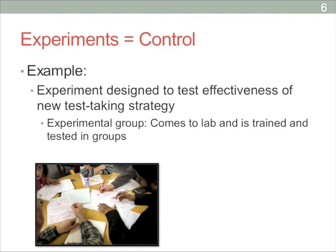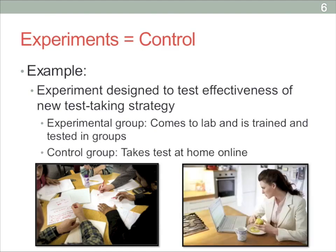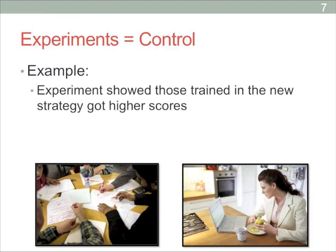For the control group, since you don't need them to do any type of training — you want them to be controls — you just have them take the test at home online. Let's say you do this experiment and in the end the experimental group finds their scores are higher. It looks as if the test-taking strategy worked, but you've got to think: what else might be causing this effect? Here you have a lot of things that differ between the two groups besides just this new test-taking strategy.